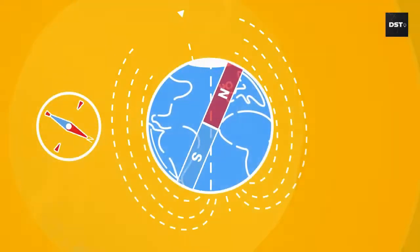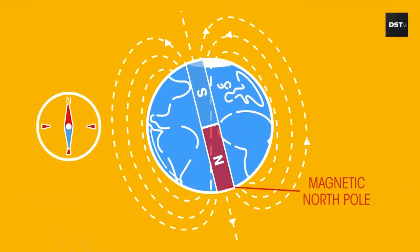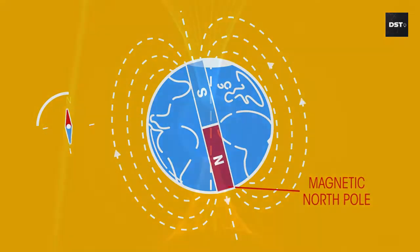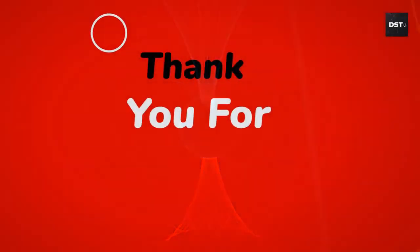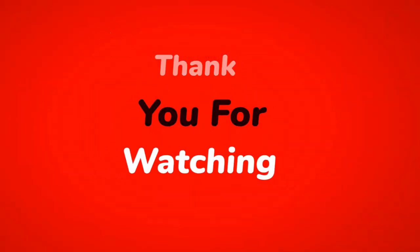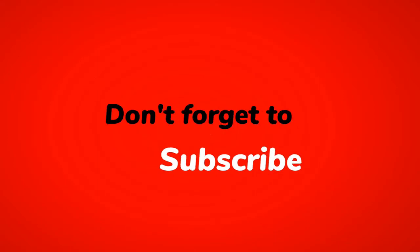Earth's core is made of nickel and iron, which produce electricity. The flow of electrically charged particles in the liquid part of Earth's core causes Earth to spread the magnetic energy around itself. That's the end of today's topic — thanks for watching.